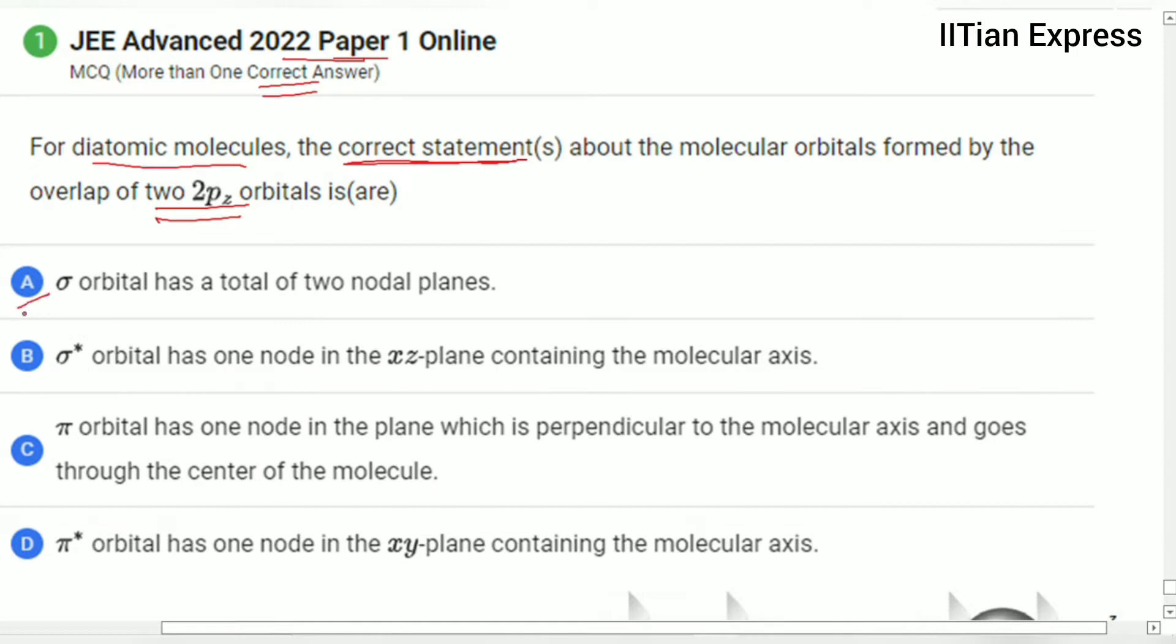Option A is saying: sigma orbital has a total of two nodal planes. Now option B is saying: sigma star orbital has one node in the z-plane containing the molecular axis.